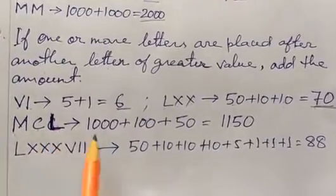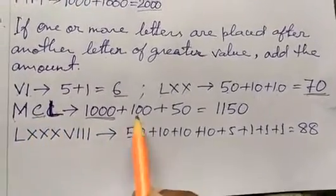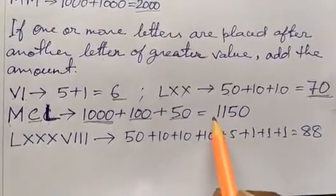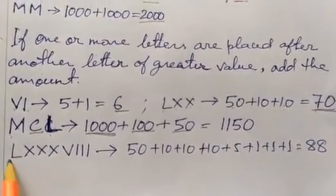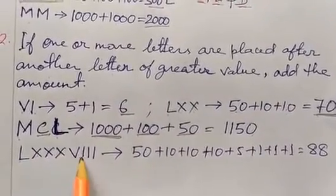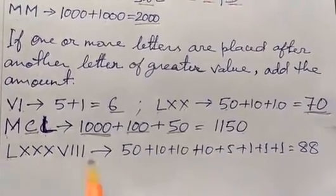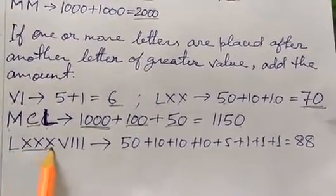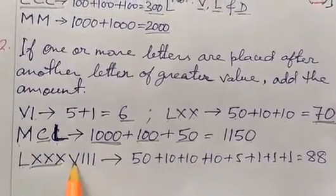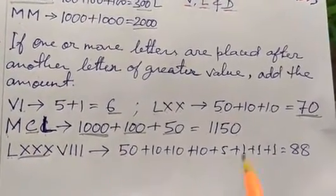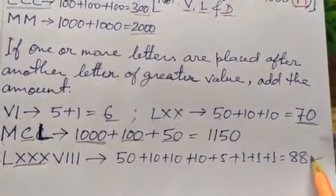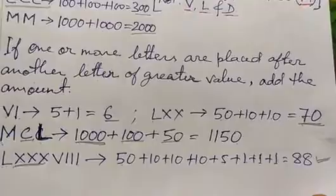MCL: M stands for 1000, C is for 100, and L is for 50, so that becomes 1150. For LXXXVIII: L is 50, three X's each equal 10, V is 5, and three I's each equal 1 — so we get 50 plus 30 plus 5 plus 3 equals 88. This is how we write using the addition principle.